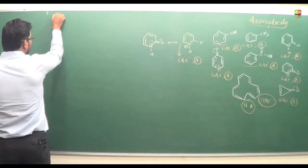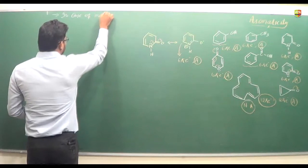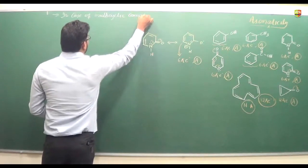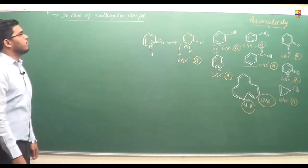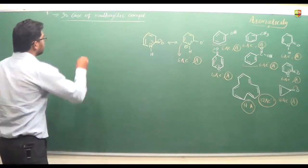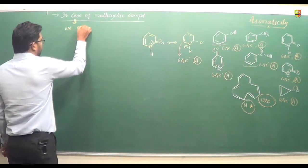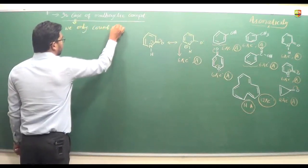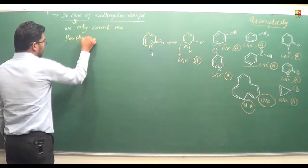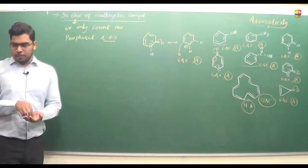In case of multi-cyclic compounds, if the compound has more than one ring present, we only count the number of peripheral pi electrons. I will explain what peripheral pi electrons means.